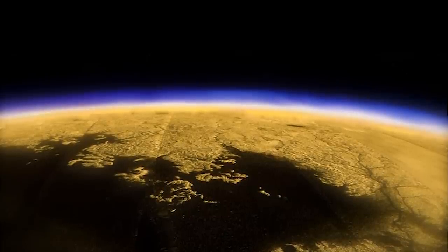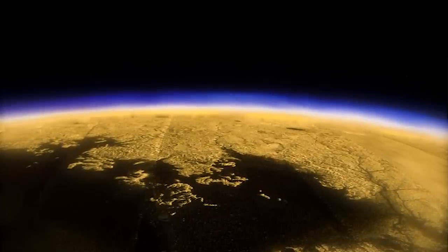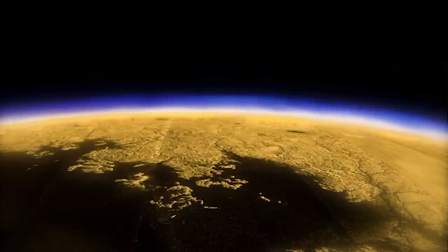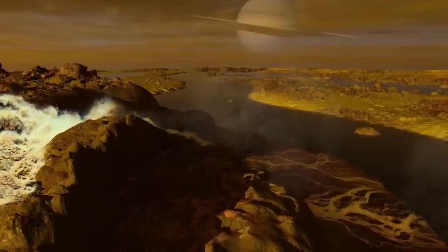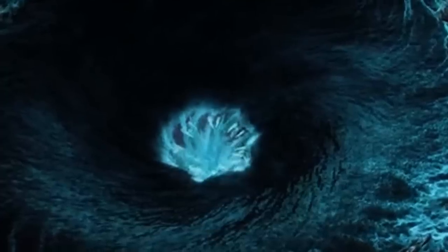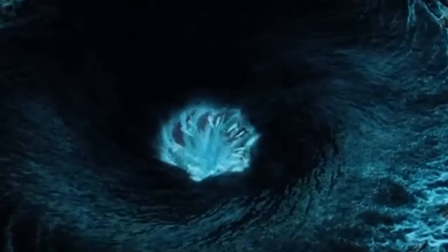Because of Titan's orbital eccentricity, it experiences more tidal forces from Saturn as it passes closest to the planet. This may cause tides of one meter generating strong currents and whirlpools in the strait, affectionately nicknamed the Throat of Kraken.